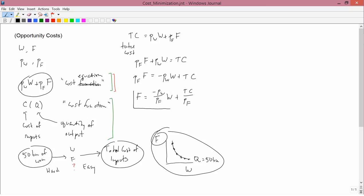This is important. This is the graph of the cost equation. You can see it has the form Y equals MX plus B. In other words, it's a straight line with a slope, m, equal to minus Pw over Pf. And a y-intercept, generically called b, equal to TC divided by Pf.